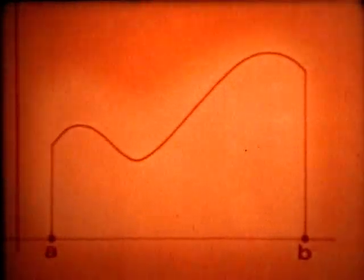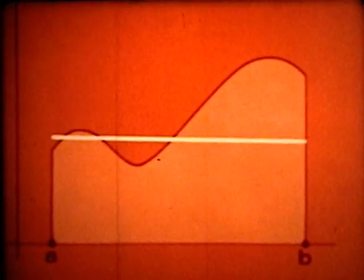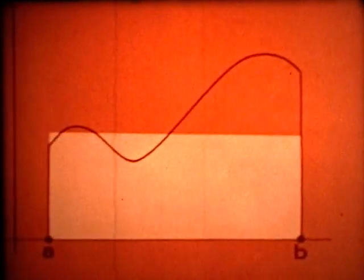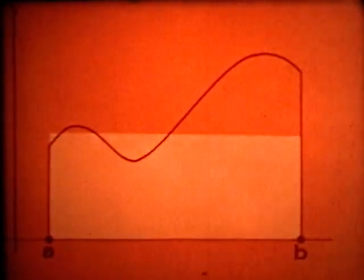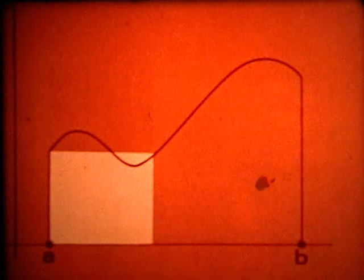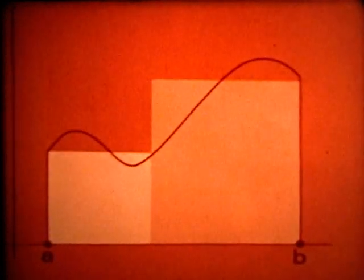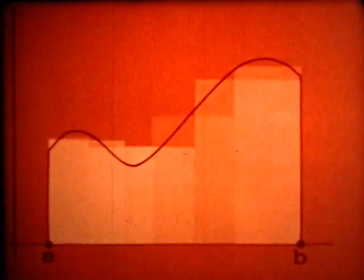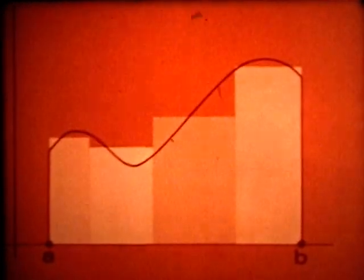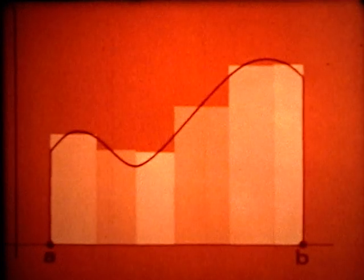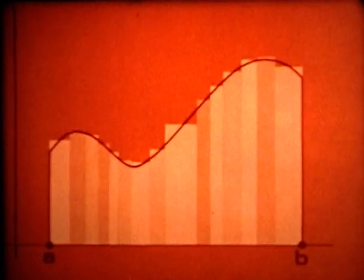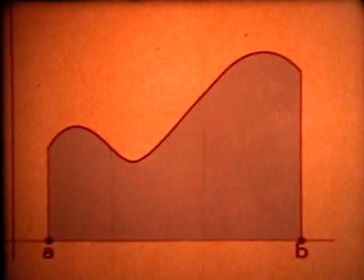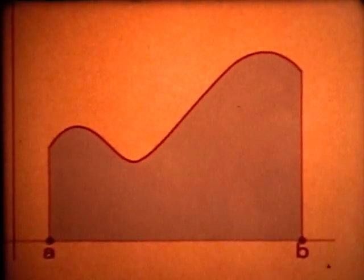A simple way to approximate this area is to draw in a rectangle by eye and compute its area. Or we might use the sum of the areas of two rectangular regions, or perhaps three, four, or more rectangles. We are going to show that the limit of such approximations is the area, and then introduce the definite integral as this limit.